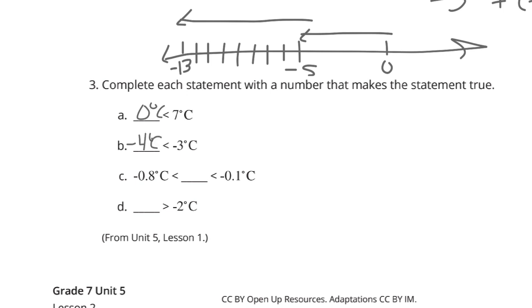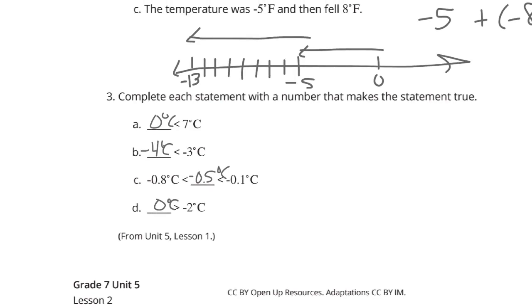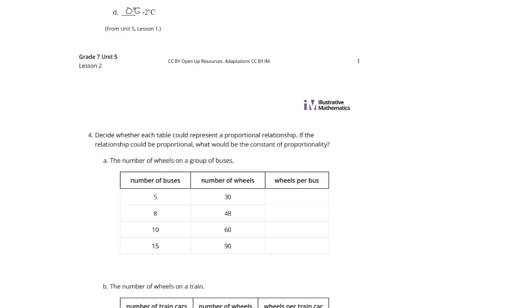Now, on C, we're looking for a number that's in between -8/10 of a degree and -1/10 of a degree. How about -1/2 of a degree Celsius? Puts you in between. And something that's bigger than -2°C could be 0°C. It's definitely greater than -2 or any positive temperature, really.